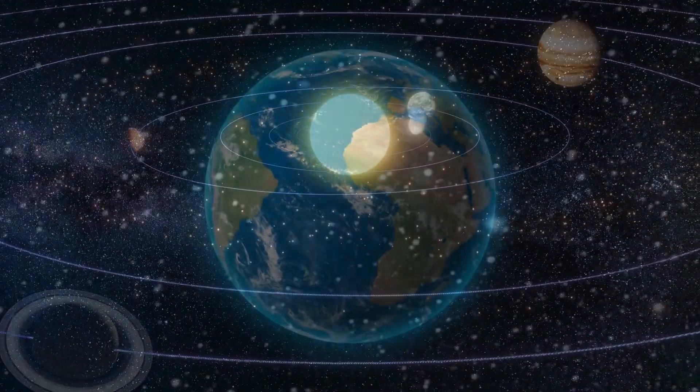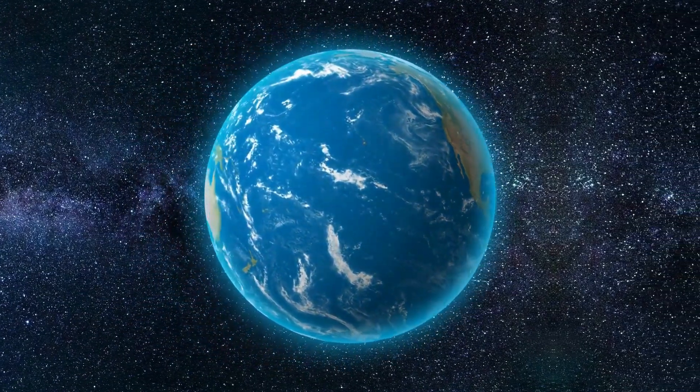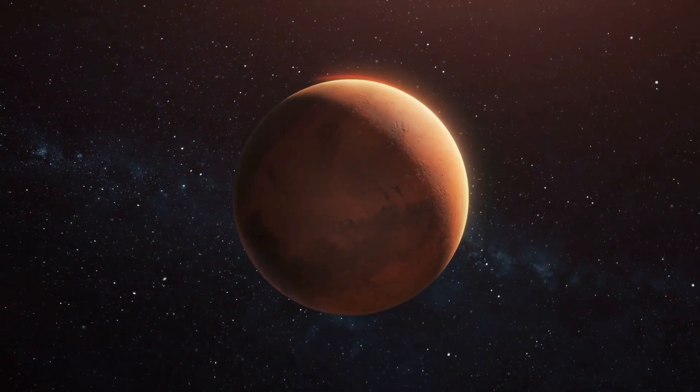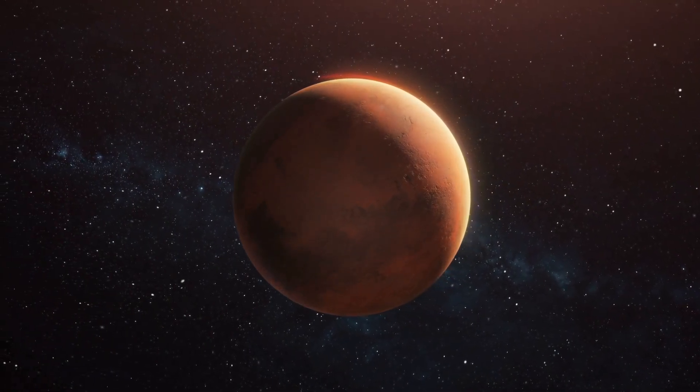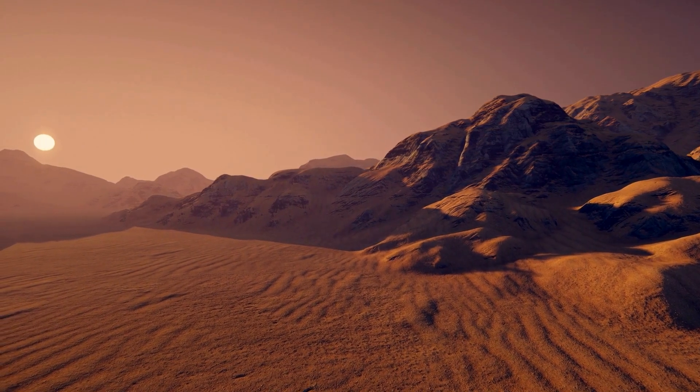Next is Earth, where we all stay, green and blue in every way. Mars is red with dusty plains, a planet of deserts, winds and flames.